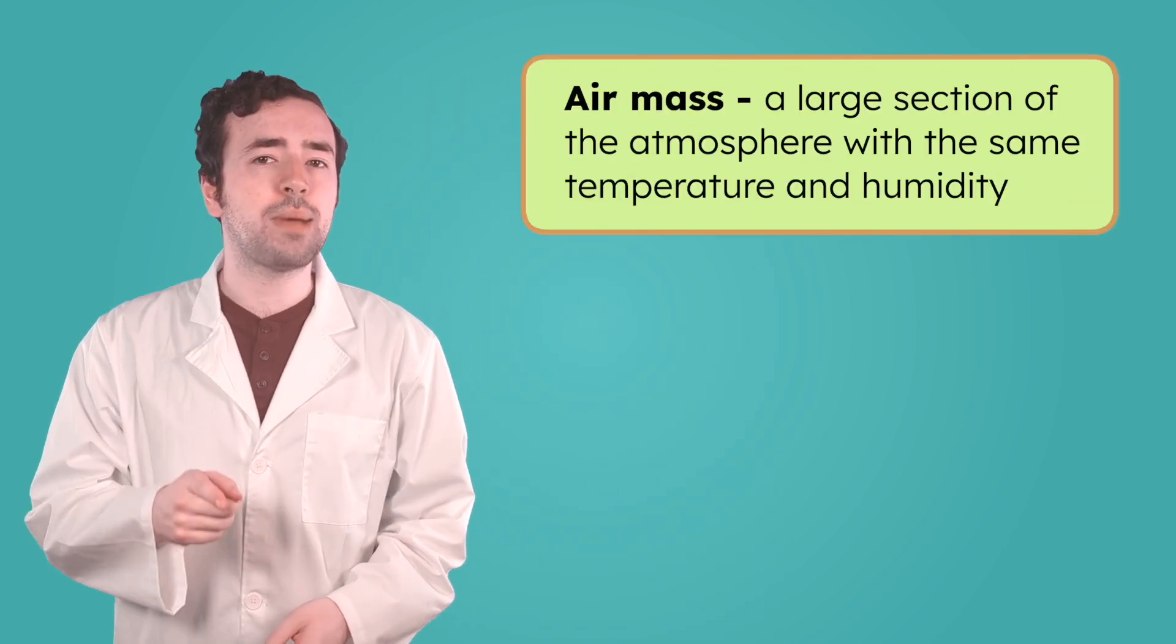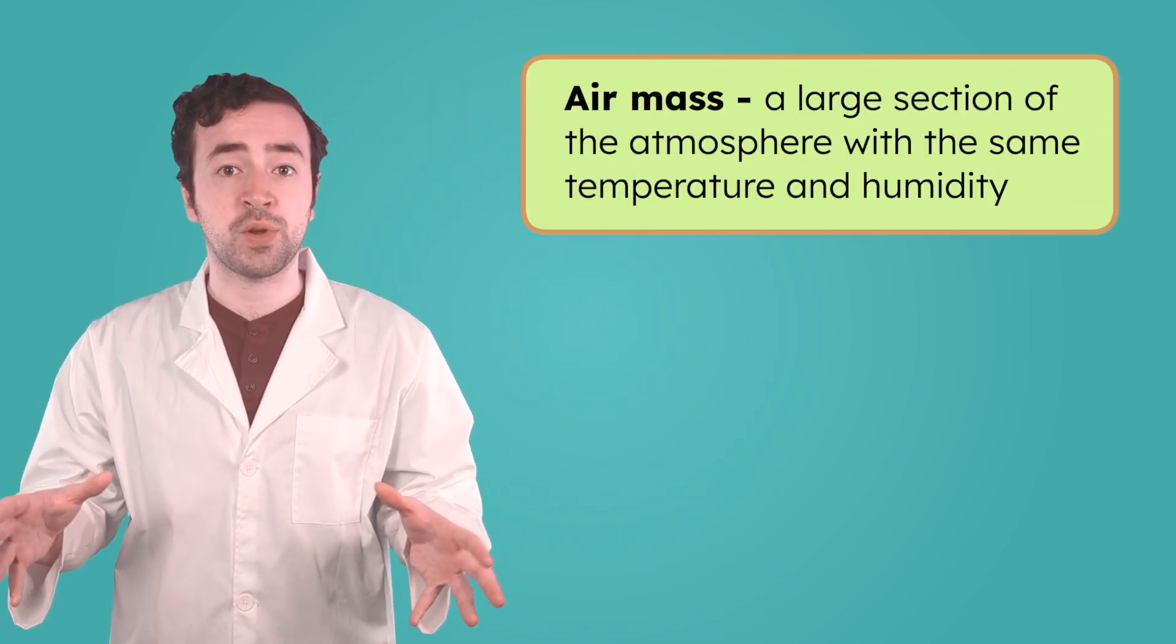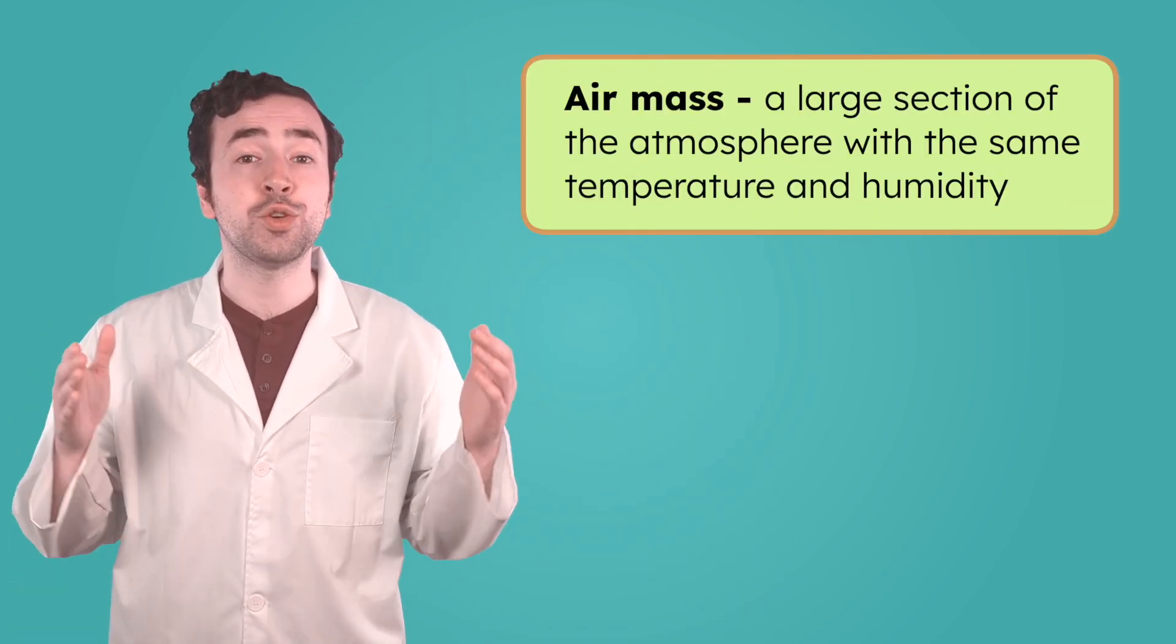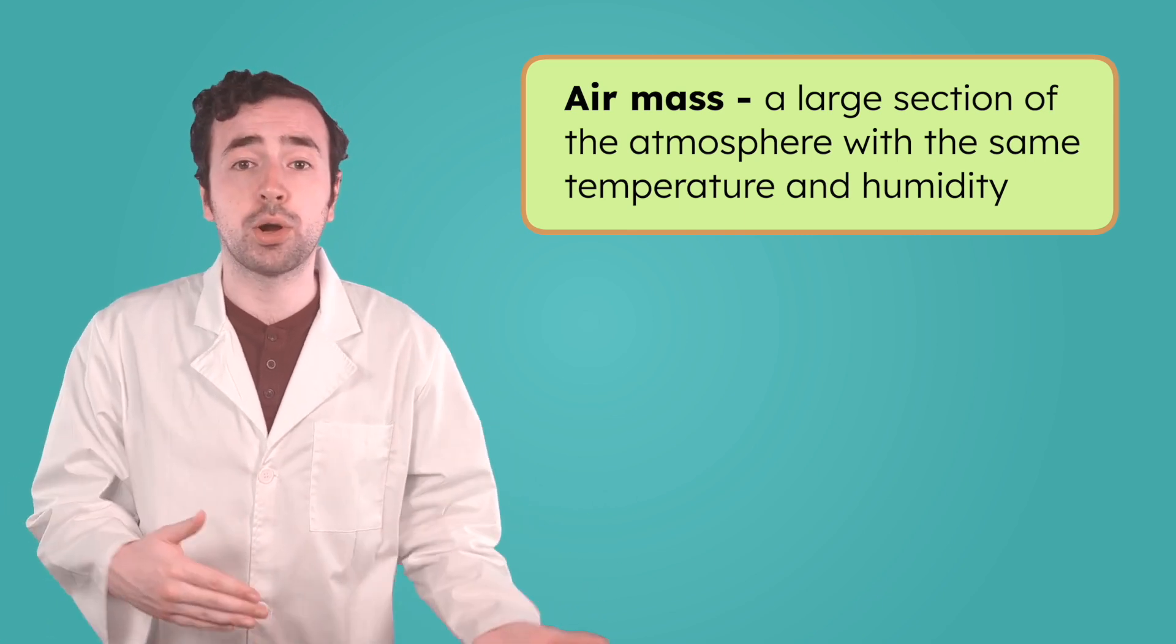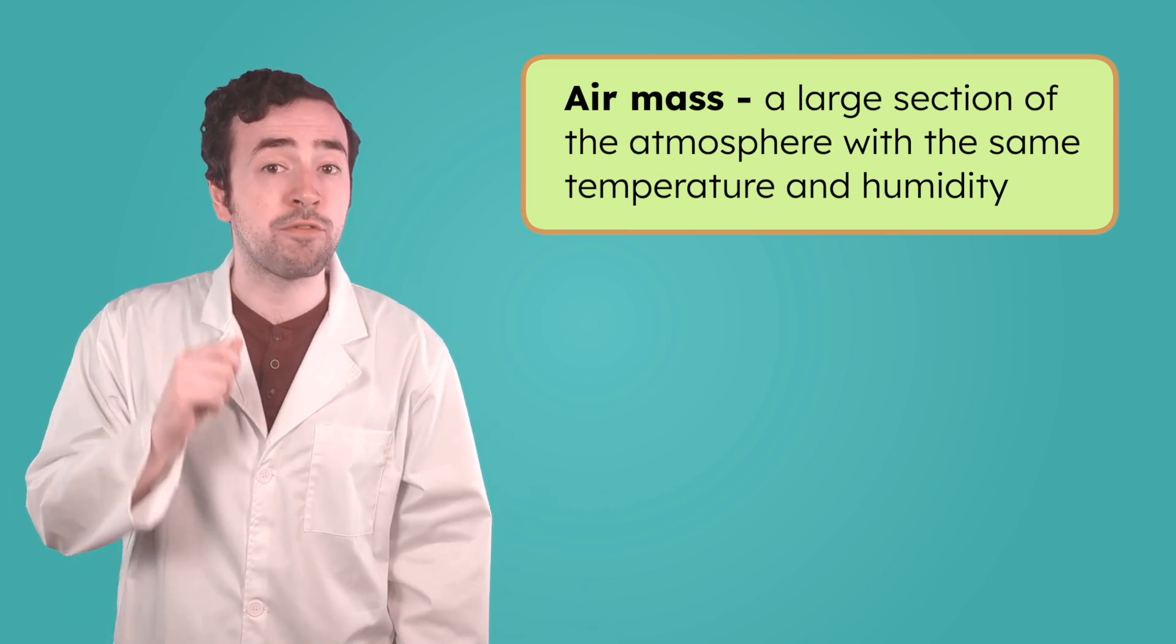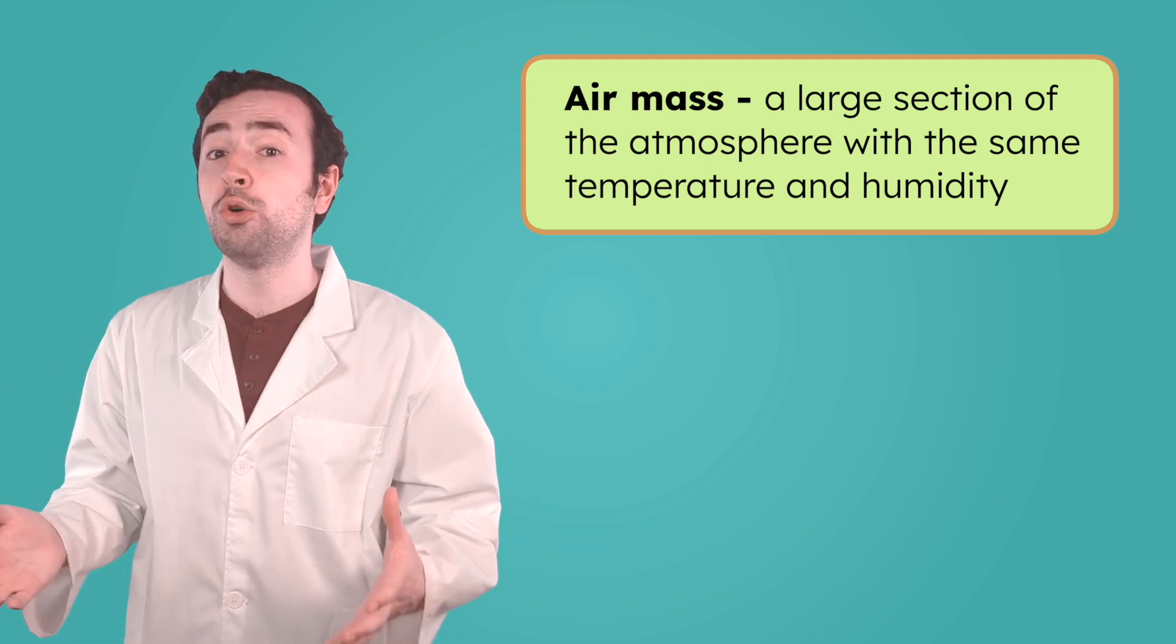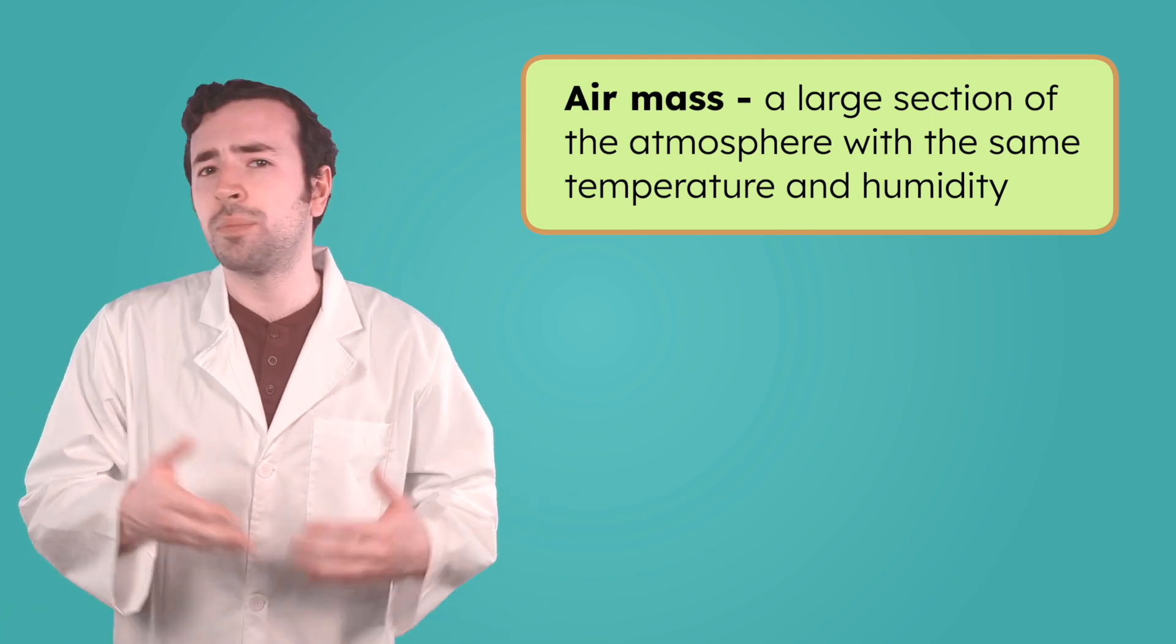The weather changes all the time because large bodies of air, called air masses, are constantly moving across the earth. An air mass is a large section of the atmosphere that has the same temperature and humidity throughout. Some air masses are warm, and some are cold, depending on where they formed—over warm oceans, cold lands, or other areas. Wind moves air masses from place to place.